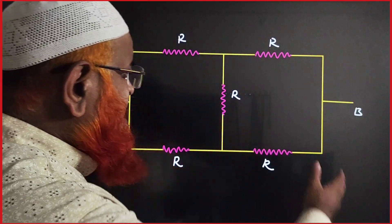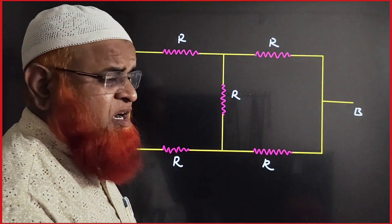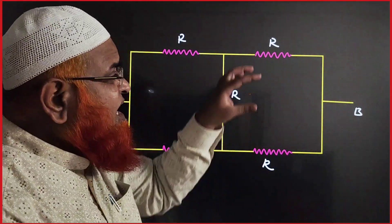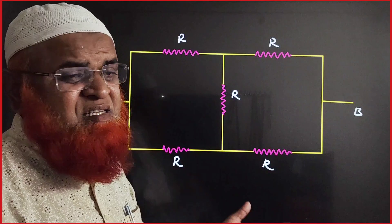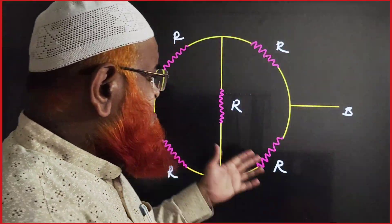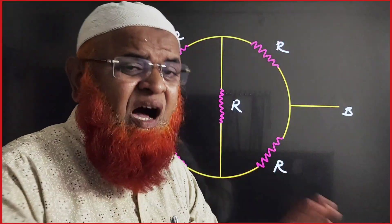Here also all the resistors are the same. This is also a Wheatstone bridge. Here also resistance will be any one of the resistances is going to be the answer. That means the answer is R. Here also this is a Wheatstone bridge. Answer is R only.